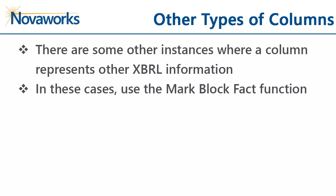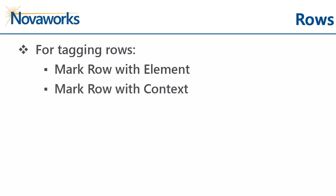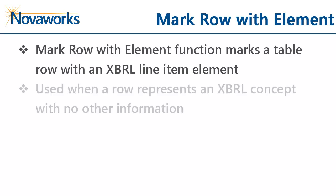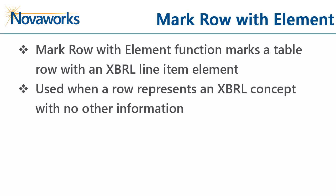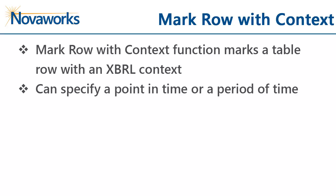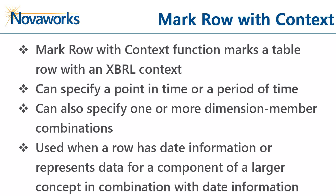Before we do that, let's go over the row functions. For rows, there are the markRowWithElement, the markRowWithContext, and the markRowWithDate functions. The markRowWithElement function marks a row with an XBRL line item element. This is used when the row represents an XBRL concept with no other information. The markRowWithContext function marks a row with an XBRL context. Like the markColumnWithContext function, the context can specify a point in time or a period of time, as well as dimension and member elements, and you can specify more than one dimension-member combination. This is used when a row has date information or represents data of a component of a larger concept with date information.